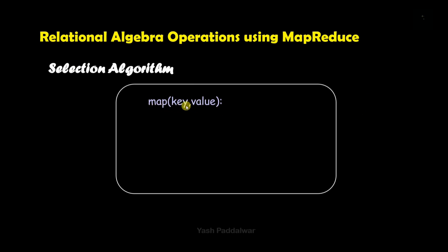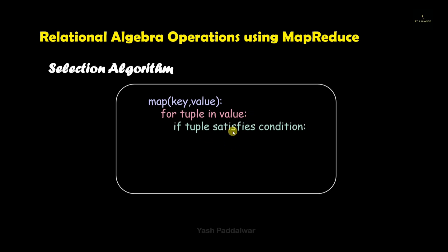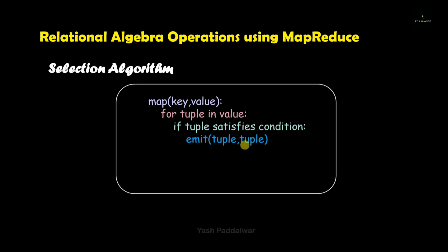In MapReduce, selection can be done with the help of a MapReduce task. Under the Map task, first we need to iterate over all the values present in that particular relation and store each value in a temporary variable called tuple. We will check whether that tuple satisfies a given condition, which can be specified by the user. If it satisfies the condition, then only will we be emitting tuple, tuple. The emit function takes two parameters — the first parameter is the key and the second is the value. So it emits the tuple as both key and value.